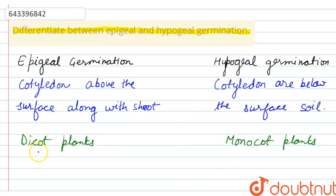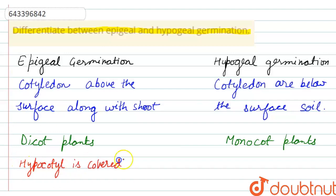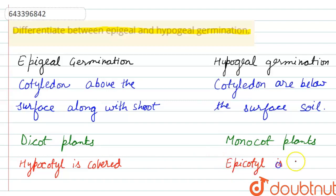In epigeal germination, the terminal part — the hypocotyl — is covered, whereas in hypogeal germination, the epicotyl part is covered. This covering serves to protect the plumule in both cases.